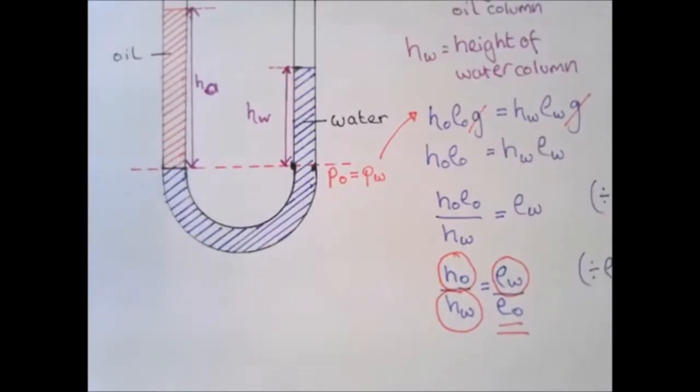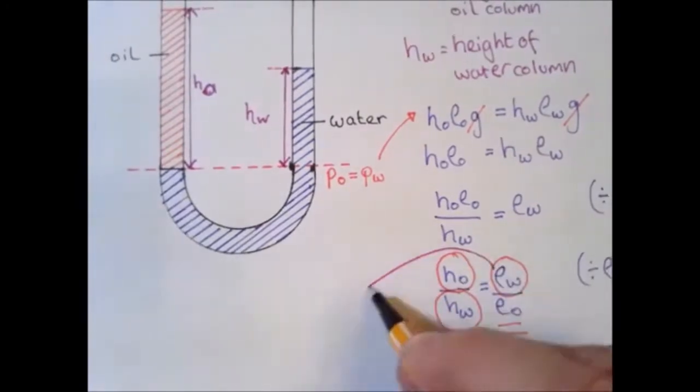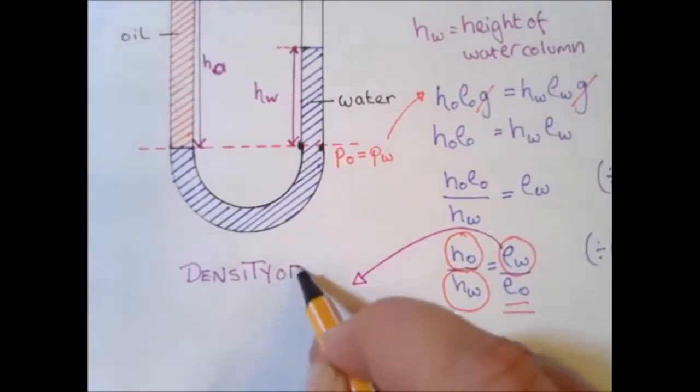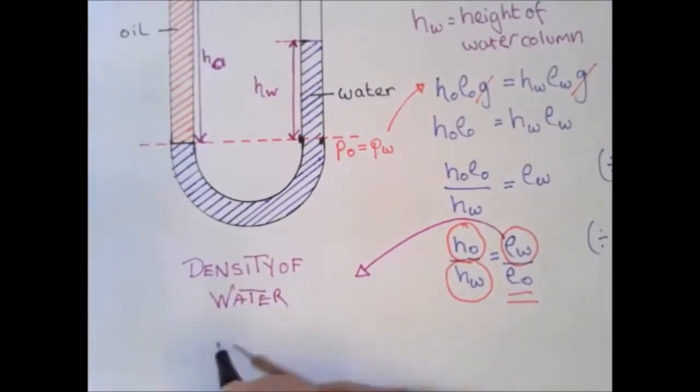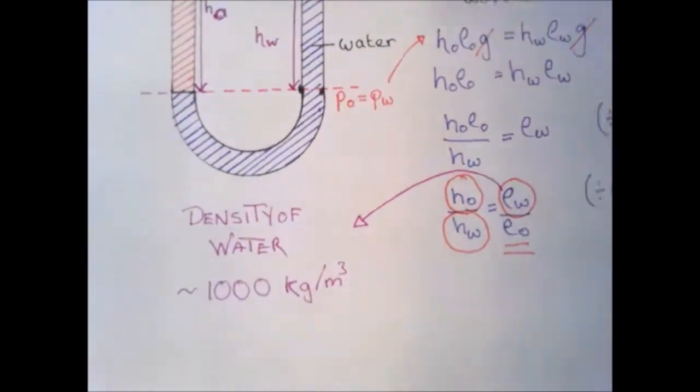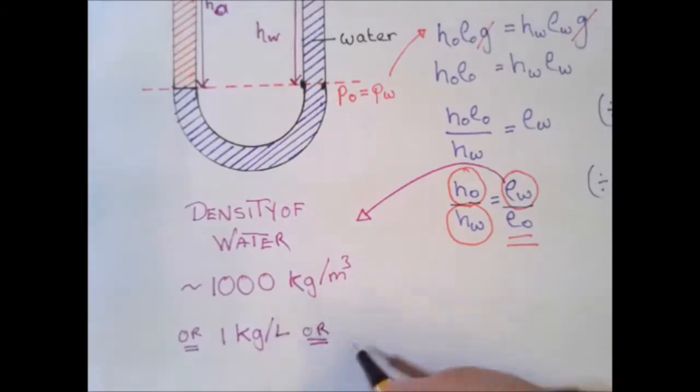And that gives us the density of oil. And that's because we know the height of the oil column, we know the height of the water column, and we also know the density of water which is 1,000 kilograms per meter cubed. During your GCSE you'll also come across lots of different versions of the density of water.